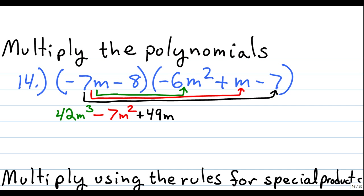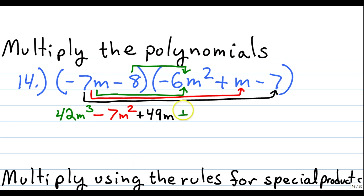Now we're ready to distribute the second term through. We're going to take this negative 8 and distribute it to negative 6m squared. Negative 8 times negative 6 gives us positive 48. We don't have an m on the negative 8, but we do have m squared, so we carry it down as is.